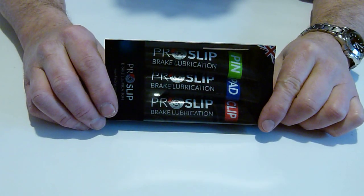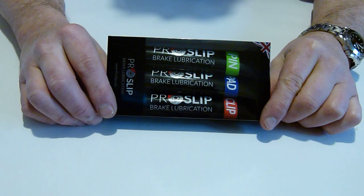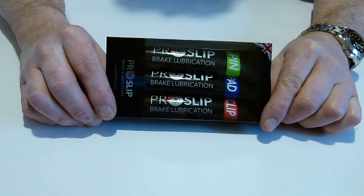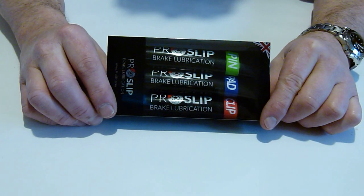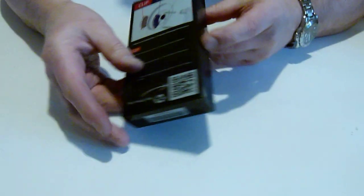Prosip contains three lubricants: one for the sliding pin, one for the brake pad, and one for the clip where the brake pad sits into the brake caliper.